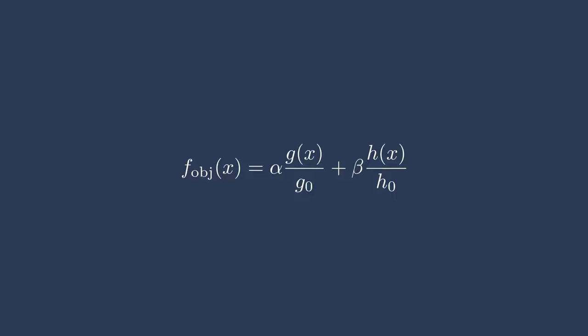Additionally, we have some notion of g0 and h0, or some scalars that are relevant for each one of the objective functions. These scalars are necessary, especially if each objective function has wildly different magnitudes.